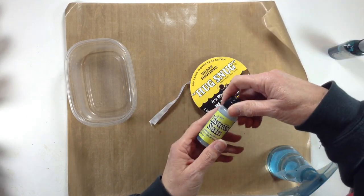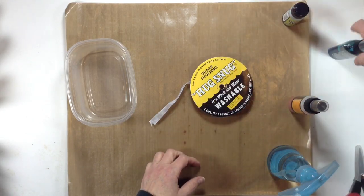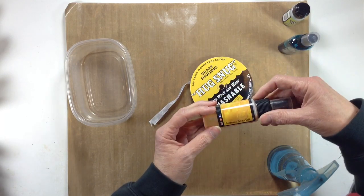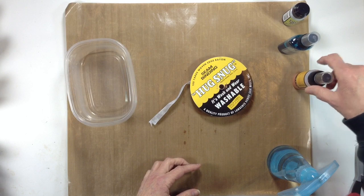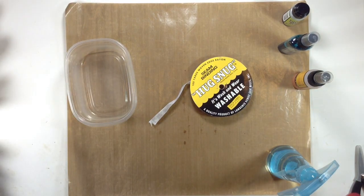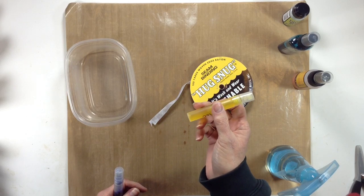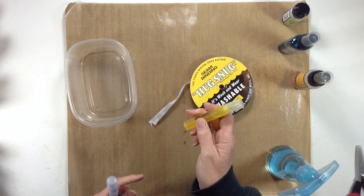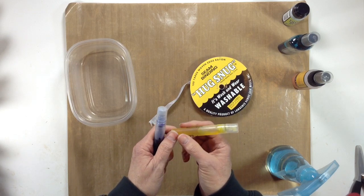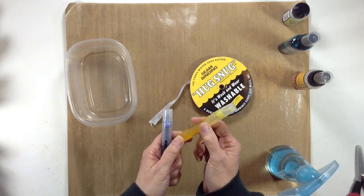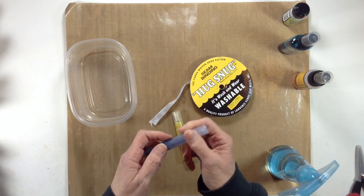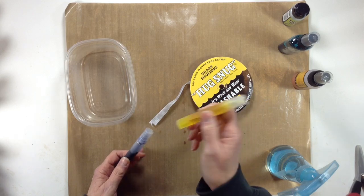You can use Distress Stain from Tim Holtz. I've used that before. Glimmer Mist obviously, and my favorite is Lindy Stamping because I really love the shimmer in that. You can also take a little mini mister or empty spray bottle and use your reinker for your ink pads. You can make a spray and add perfect pearls so it would have shimmer in it.